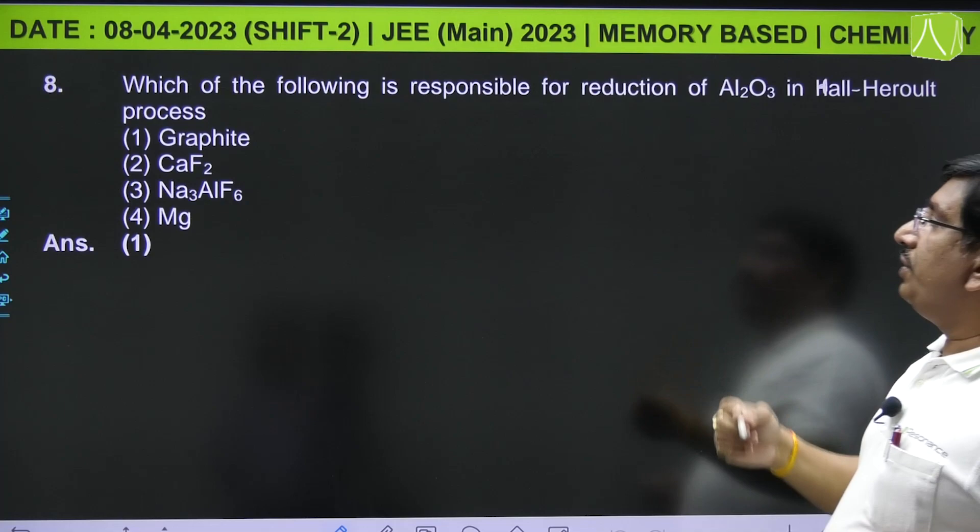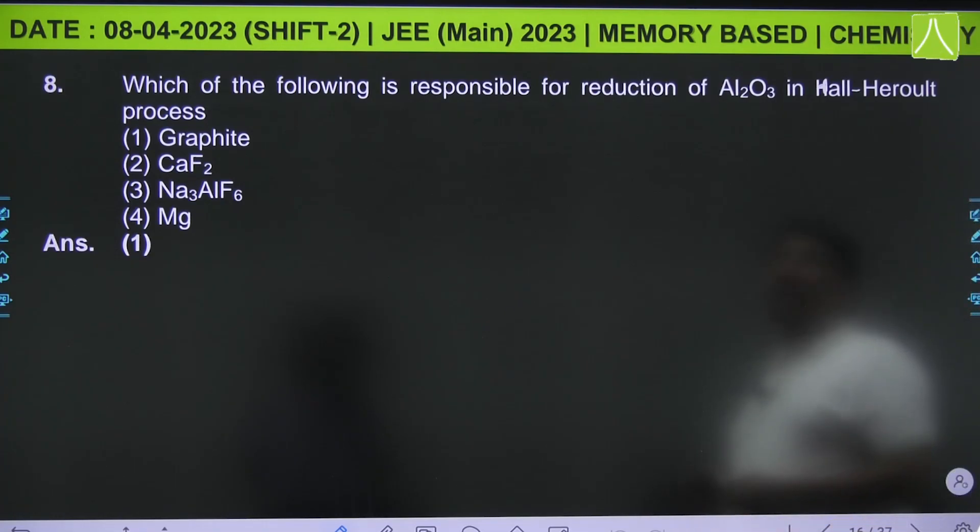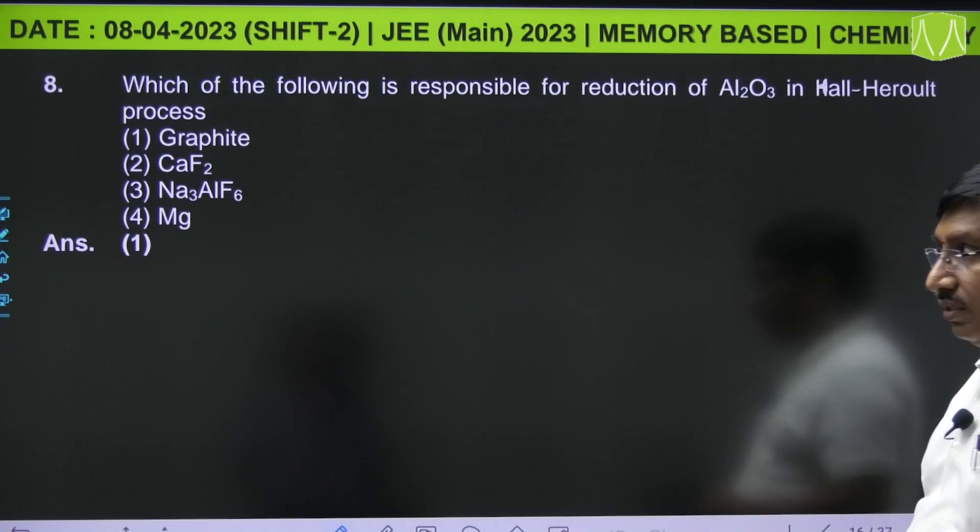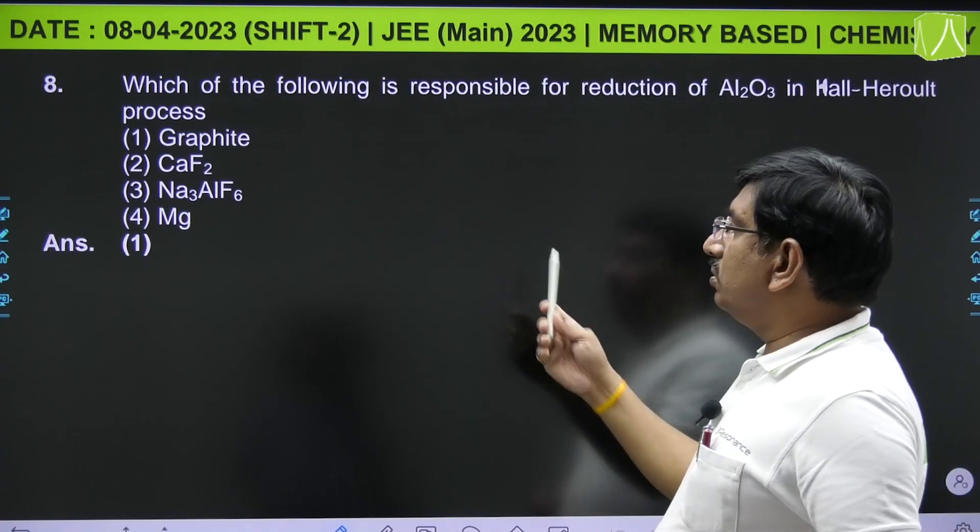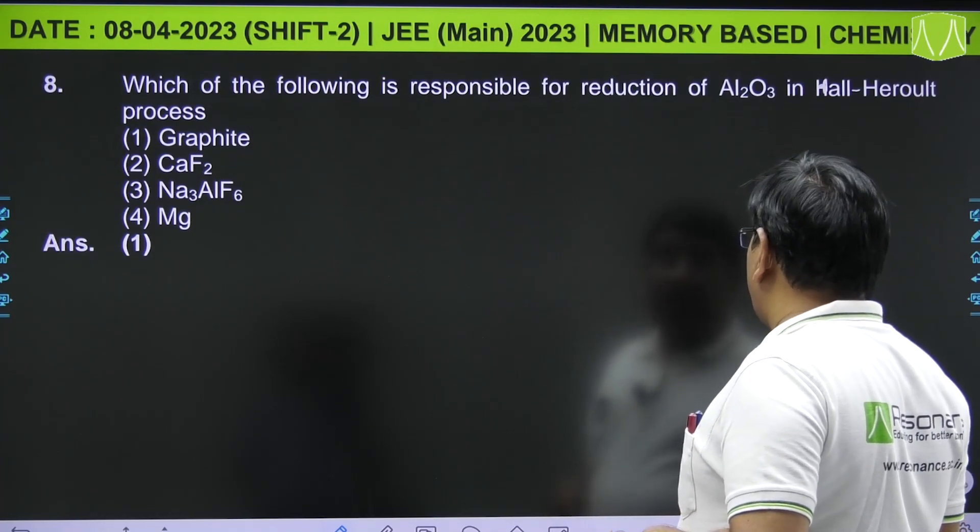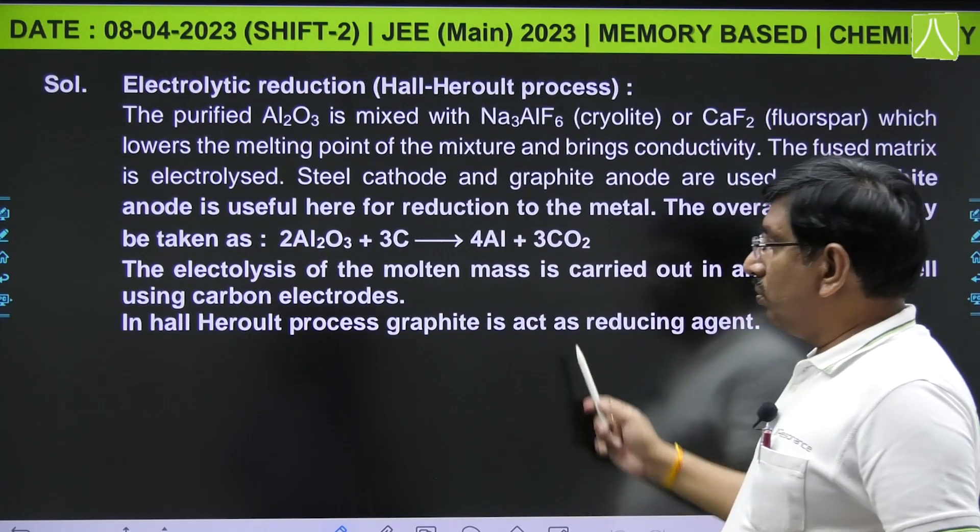Next, which of the following is responsible for reduction of Al₂O₃ in Hall-Heroult process? That is graphite, which is used as anode. It can be used in the Hall-Heroult process for the reduction of Al₂O₃. This is from metallurgy.